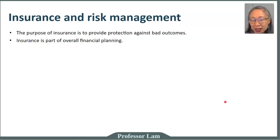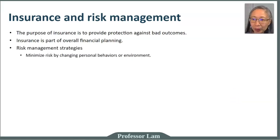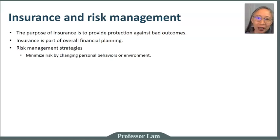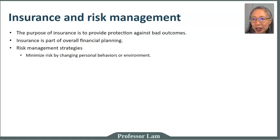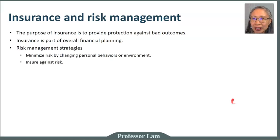How can we minimize our risk? Life is full of risk, but you can do some risk management on your own by changing your personal behavior or environment. For example, you can drive at the speed limit, always wear your seatbelt, buy cars with airbags, have alarms for your home, and have fire and smoke detectors. Those are things you can do to minimize risk.